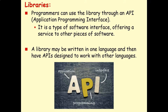Programmers can make use of a library through something called an API — application programming interface. This is a type of software interface offering a service to other pieces of software. Interestingly, a library may be written in one language and then have APIs designed to work with other languages.